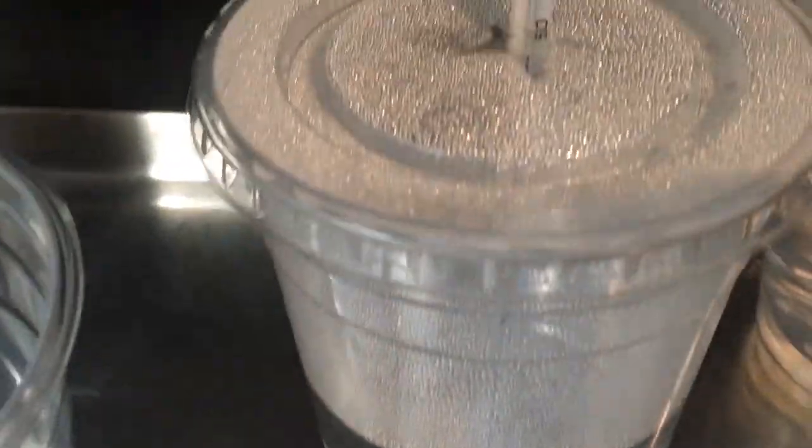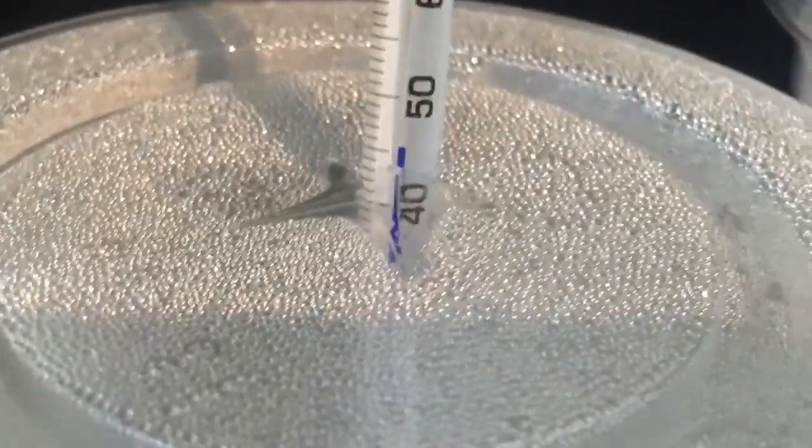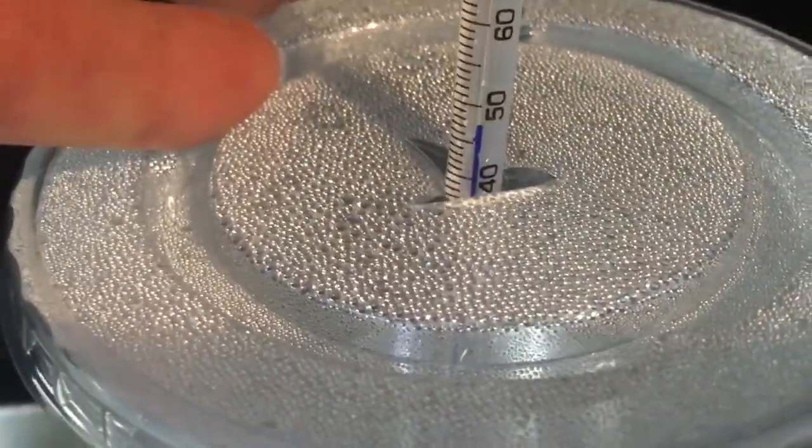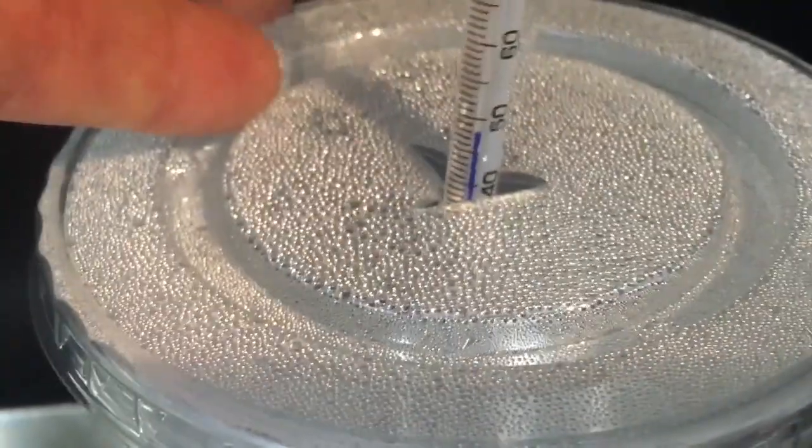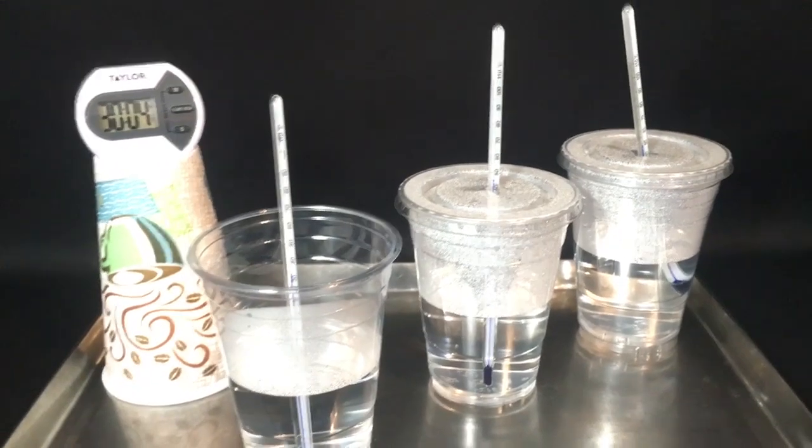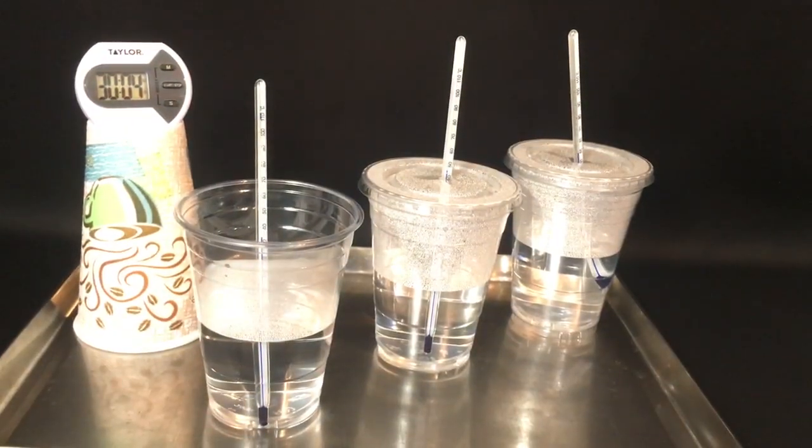And the second cup, the regular cup with the lid, we are at 45 degrees Celsius. And then finally, the double walled plastic cup with the lid, we are at 48 degrees Celsius. There you go. Please record those temperatures in your table.